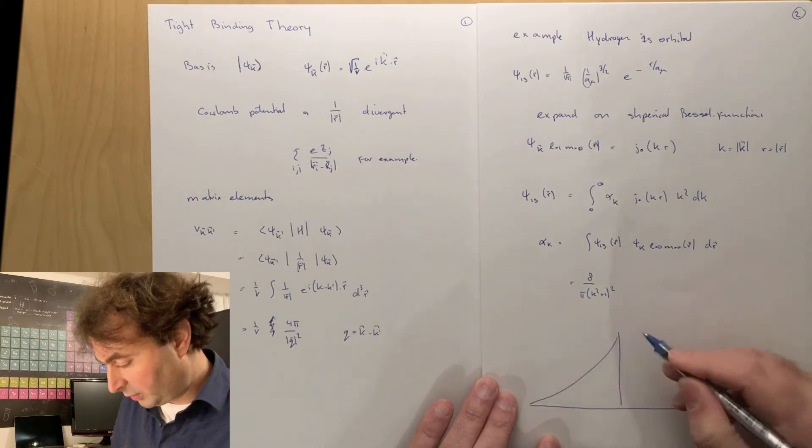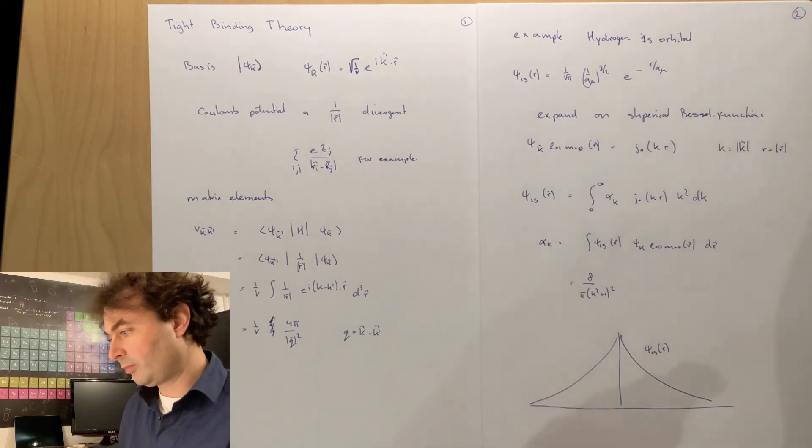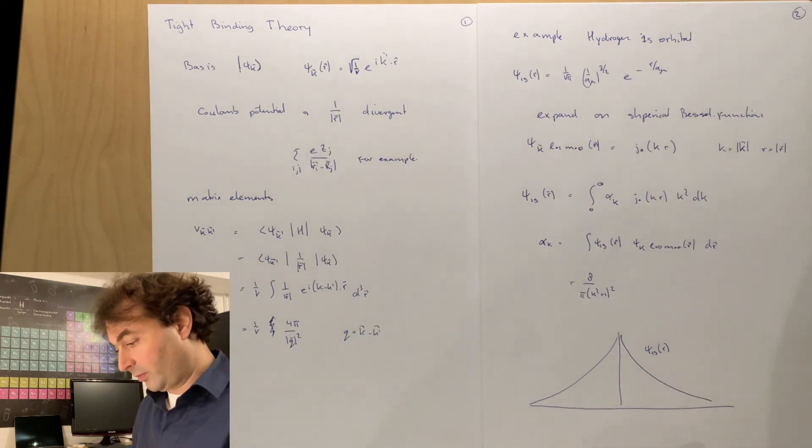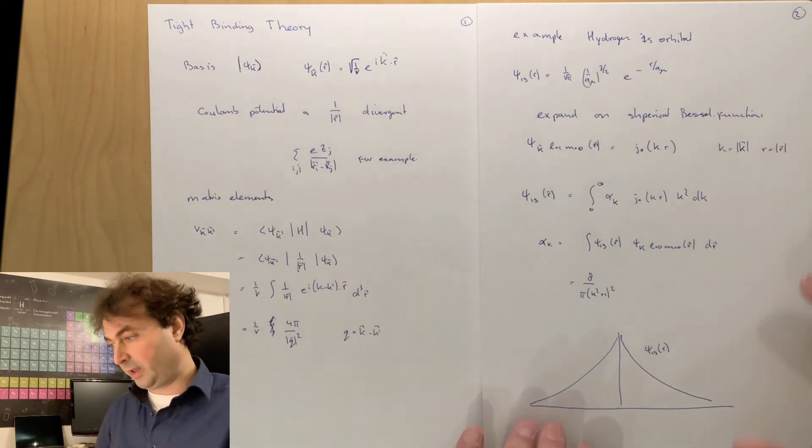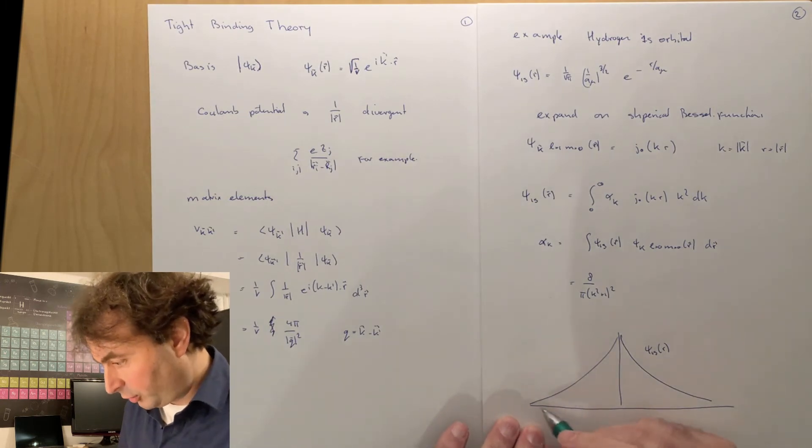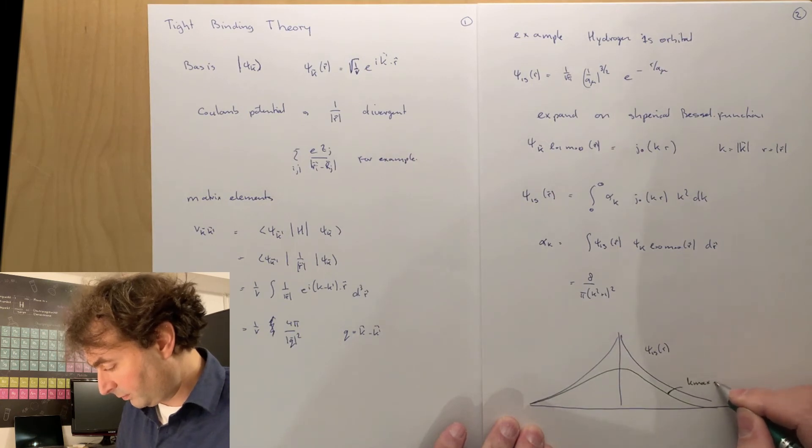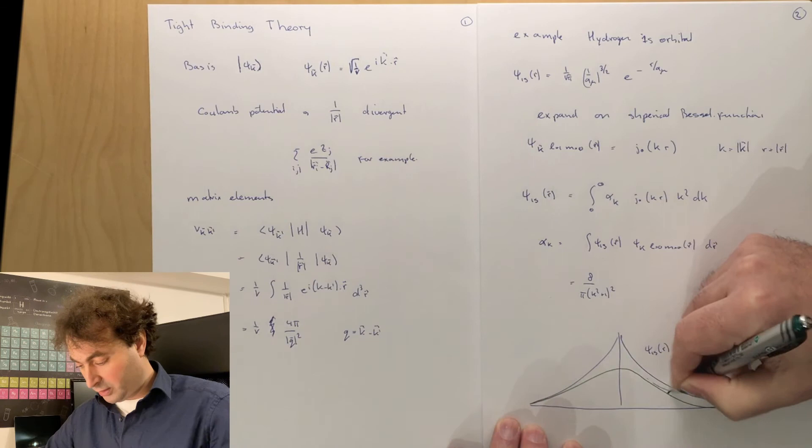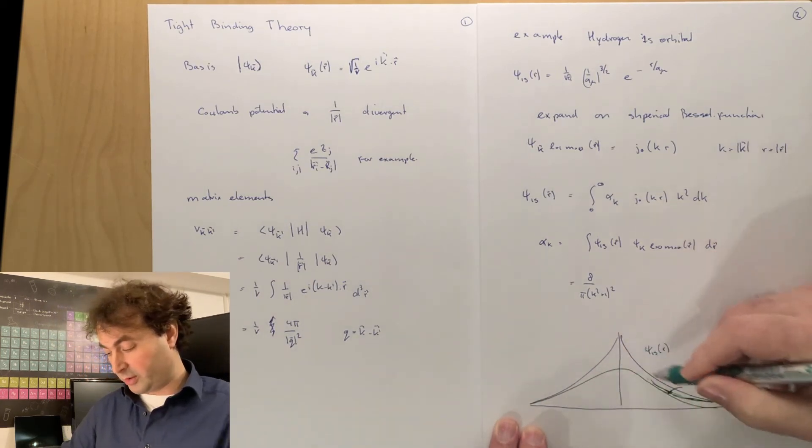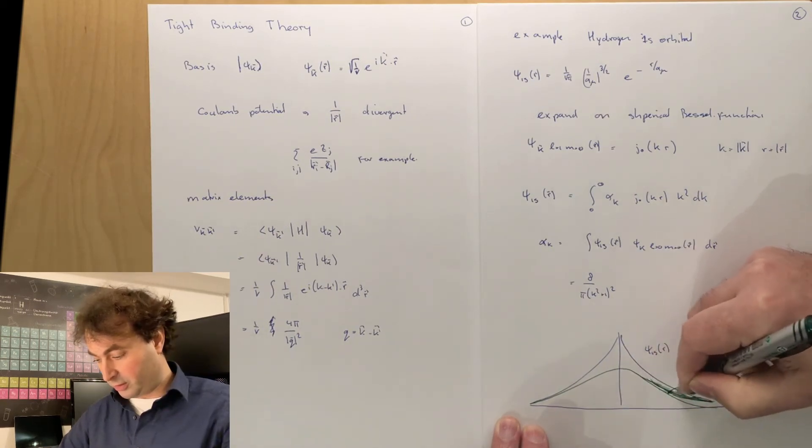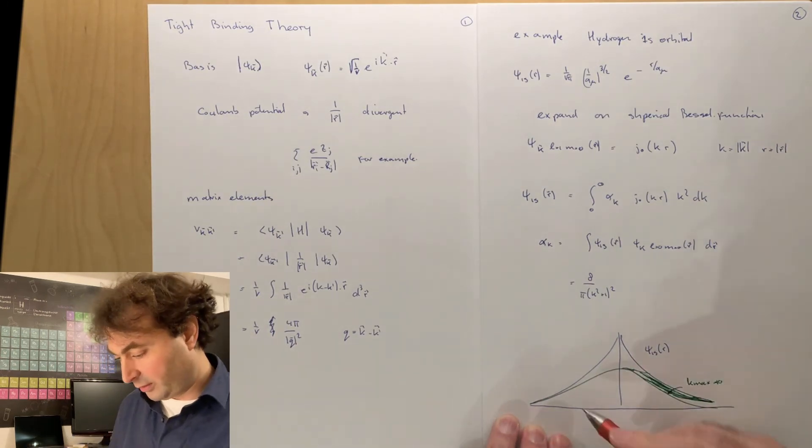So if I make a plot of the 1s wave function, and I can now project this onto my spherical Bessel functions and I stop at a certain wave vector, then if I say I stop at k is equal to 10, then in the wings it is fine, but you see that this sharp change that we have close to the nucleus is approximated by a function that is much smoother than what the true wave function is.